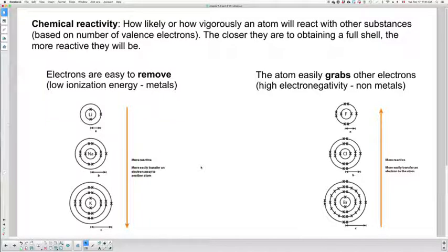So chemical reactivity. It's how likely or how vigorously an atom will react with other substances to achieve or obtain a full valence shell. Some of them will tend to gain electrons to complete their shell.